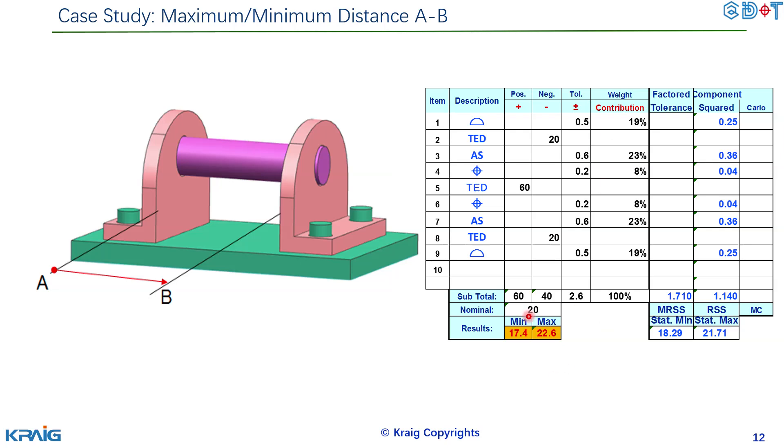Here nominal is 20 and plus minus 2.6 and then you get the maximum distance is 22.6, minimum distance is 17.4. And that's the way you're gonna use to analyze the tolerance stack up on assembly parts using position and profile tolerance. Okay thanks for watching, I'm gonna see you in the next module.